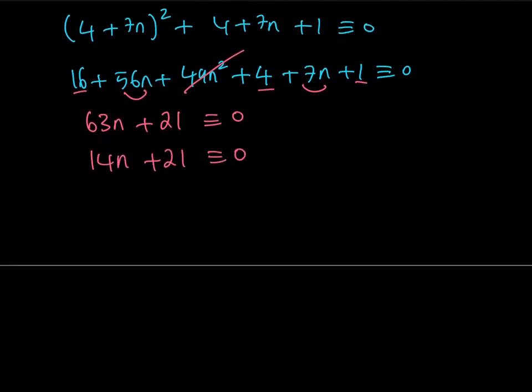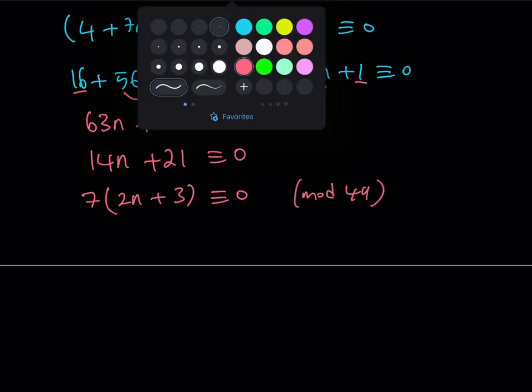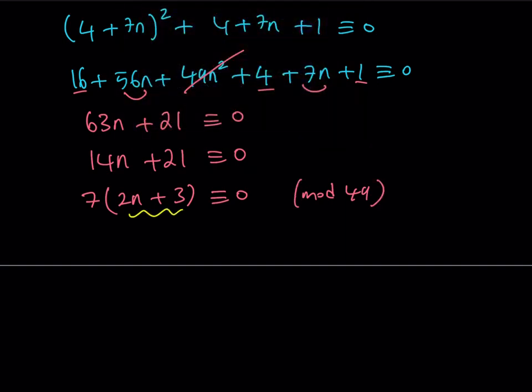Now, 63 is greater than 49, so I can reduce it. If you subtract 49 from it, you're going to get 14n + 21 ≡ 0 (mod 49). Now, again, like the other solution, we can factor out a 7, and we should be getting 7(2n + 3) ≡ 0 (mod 49). So this means that 2n + 3 is a multiple of 7, right? So in other words, 2n + 3 ≡ 0 (mod 7). This is a multiple of 7, this is a multiple of 7, their product is a multiple of 49. Makes sense.